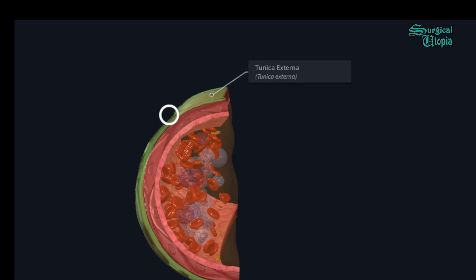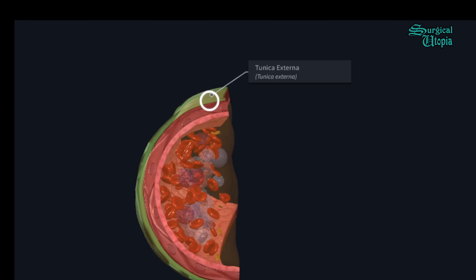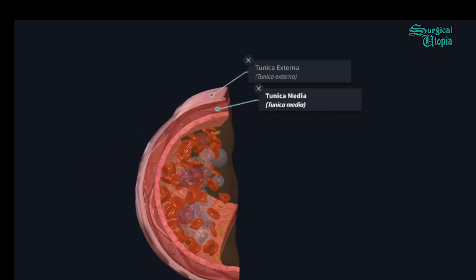It also has a protective function of restricting sudden expansion of the artery and thereby preventing any damage to it. The second layer we see is the tunica media.